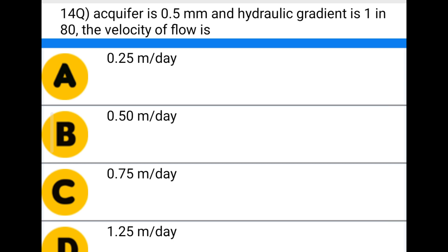Next question: an aquifer has a coefficient of 0.5 mm and hydraulic gradient of 1 in 80. The velocity of flow is — option A: 0.25 m/day, option B: 0.50 m/day, option C: 0.75 m/day, option D: 1.25 m/day. The correct answer is option D: 1.25 meters per day.